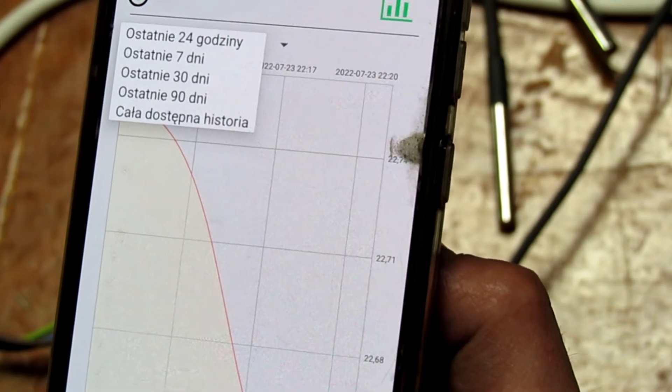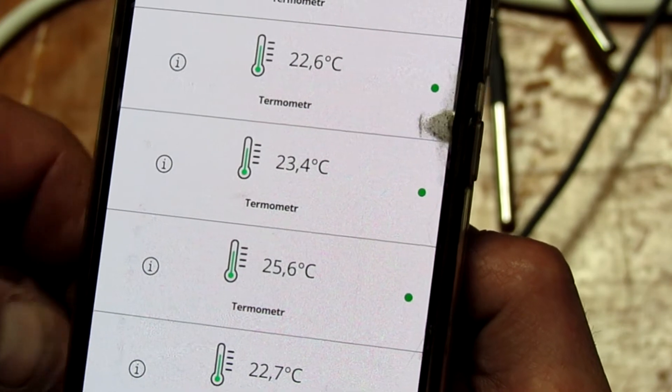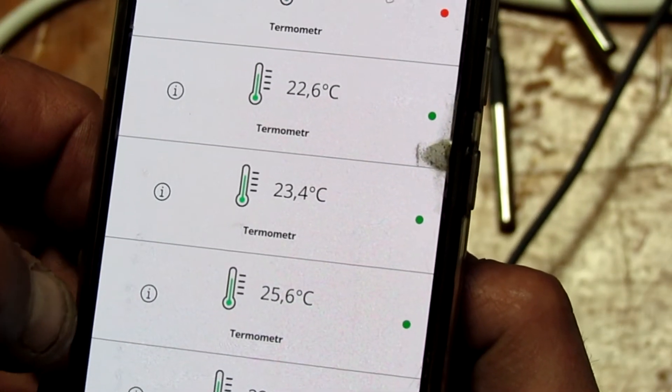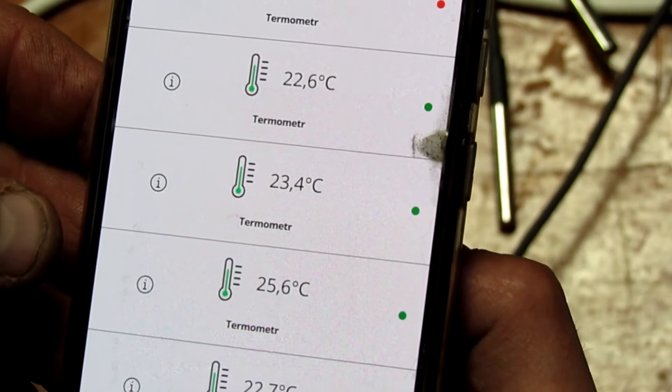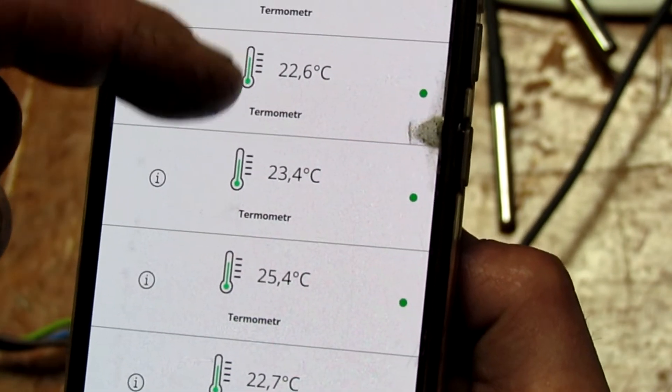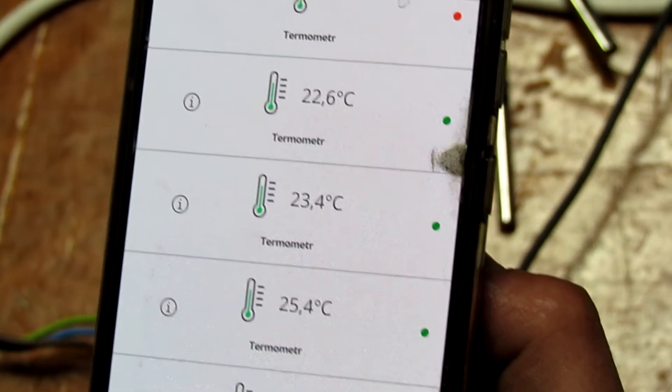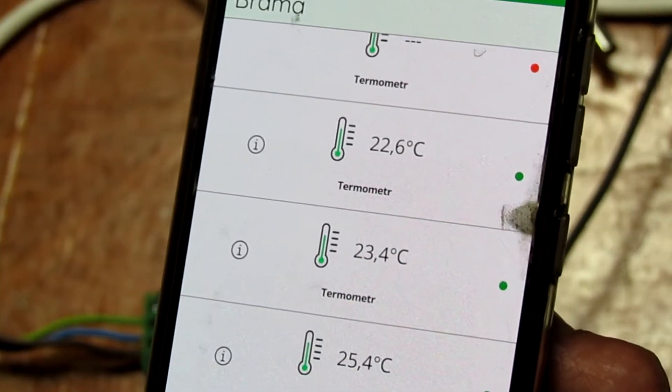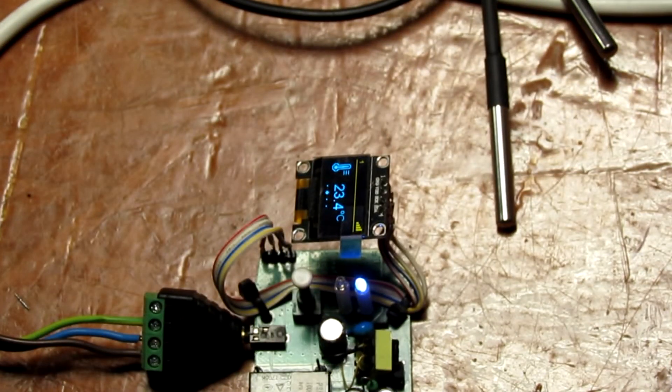To jest taki jakby wskaźnik graficzny, co w danej temperaturze się, co w danym dniu, czy w danej godzinie, jaka była temperatura. Także to są poszczególne temperatury. Na wyświetlaczu dodatkowo mamy siłę sygnału i pokazany przekaźnik, że można go włączyć i wyłączyć.